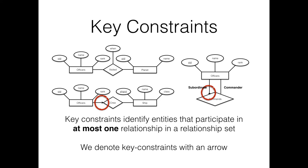[Student confirms understanding.] Every officer can only participate once in the subordinate side of the commands relationship. An officer can only participate once in the crew relationship, whereas a ship can have multiple officers. This gives us one side of a key constraint — it tells us one-to-one versus many-to-many versus one-to-many relationships.